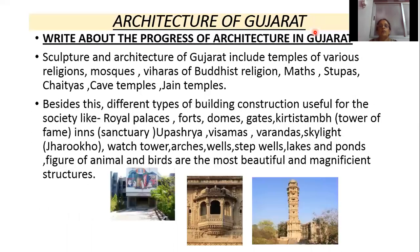The next topic is architecture of Gujarat. Write about the progress of architecture in Gujarat. Sculpture and architecture of Gujarat include temples of various religions, mosques, Viharas of Buddhist religion, Mats, Stupas, Chaityas, cave temples, and Jain temples.